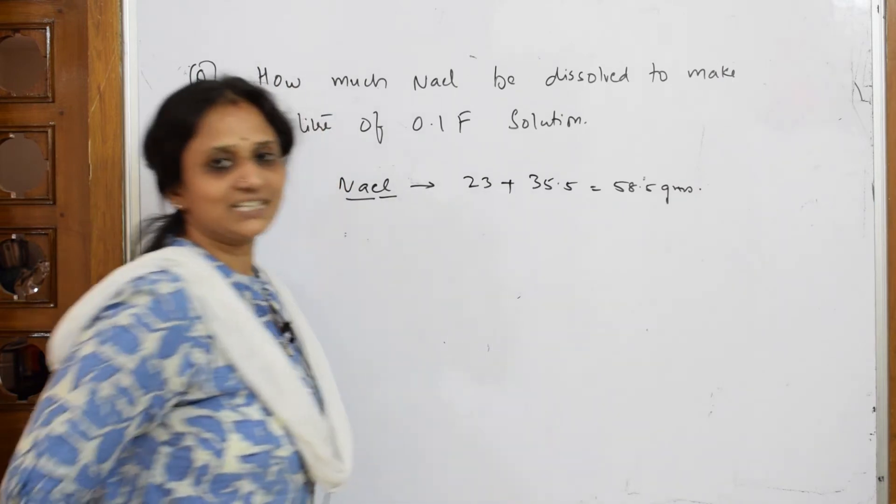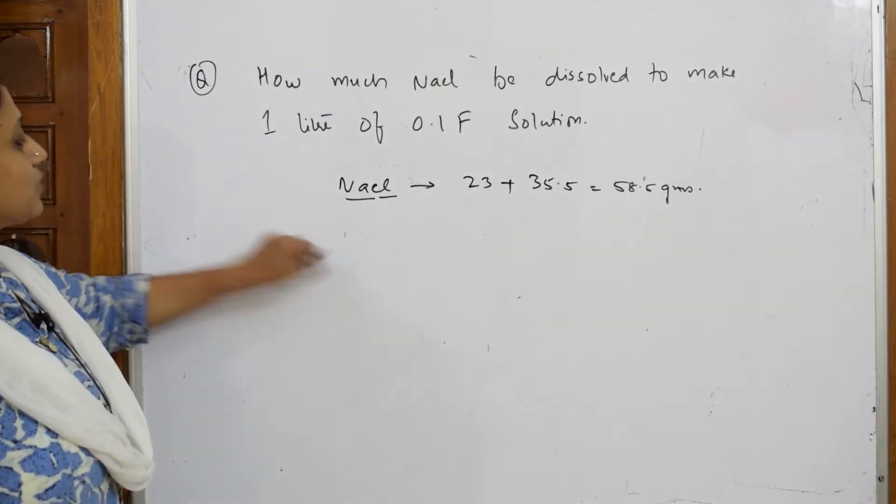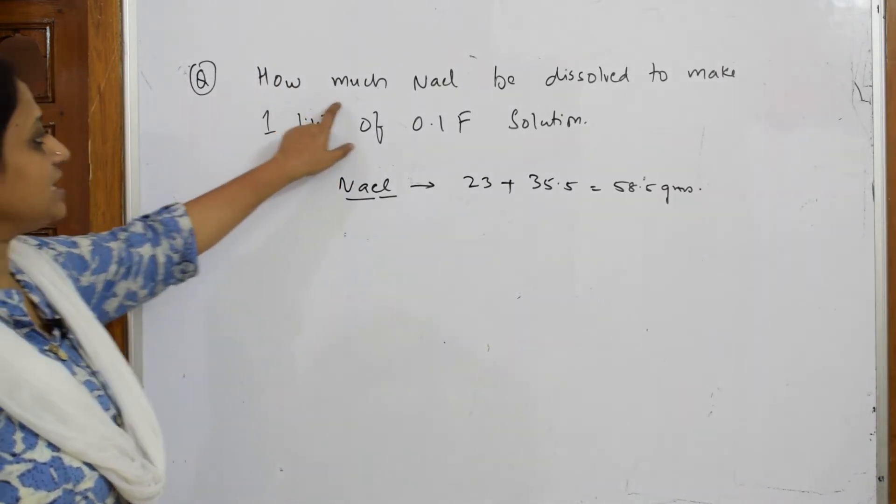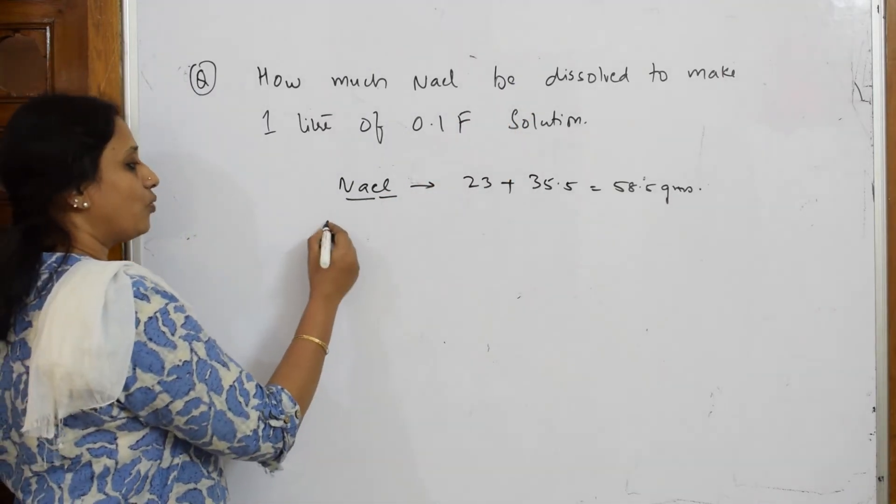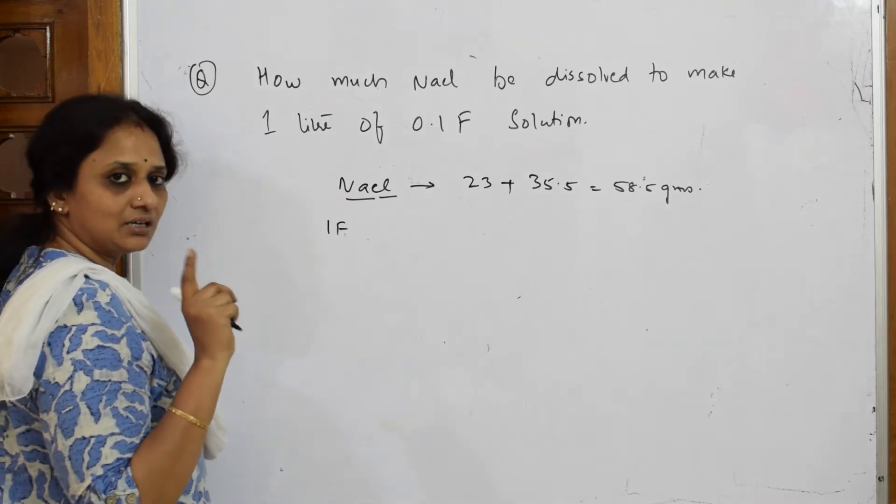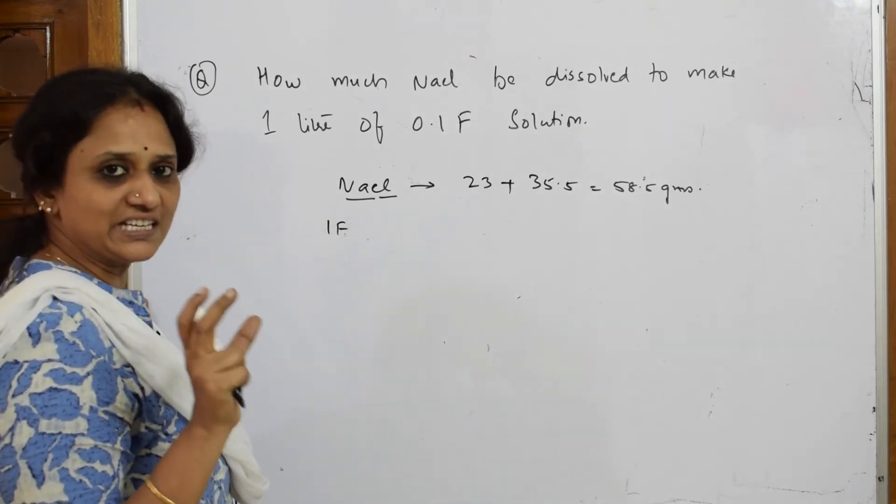Now let's come back. What do they say? How much of NaCl to be dissolved? Now basically, one formal - suppose if I take one formal solution of NaCl, that is for one liter of NaCl we require one formal solution of NaCl.